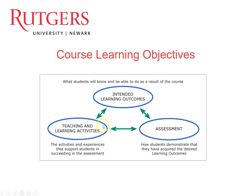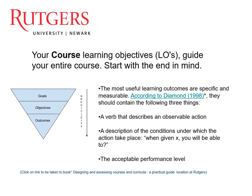As we can see in this visual, designing a course is a circular type of motion. You begin with what your intended learning outcomes are, and then you think of the different learning activities and assessments that you will use in order to support having that learning outcome. When you are constructing your course learning objectives, you want to begin with the end in mind — that is backwards design.